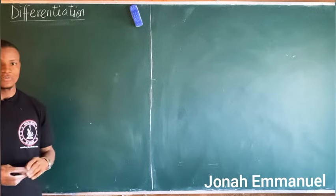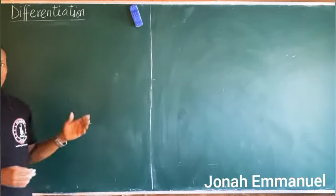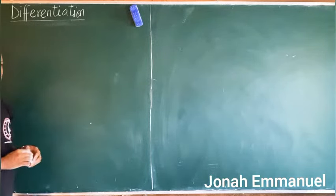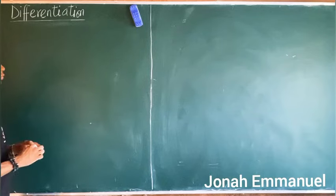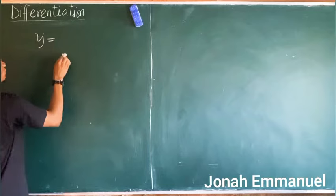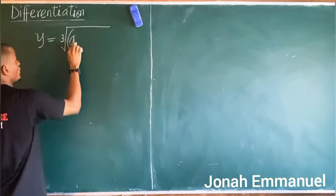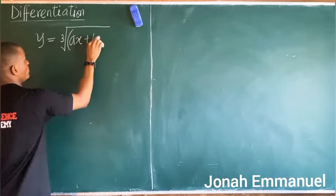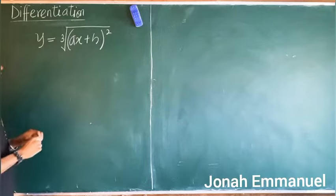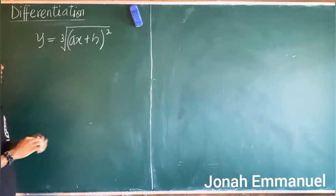Hello and welcome to Excellence Academy. We are still on chain rule — we'll take more examples on chain rule and work on them. Let's say y is equal to the cube root of (ax + b) squared.